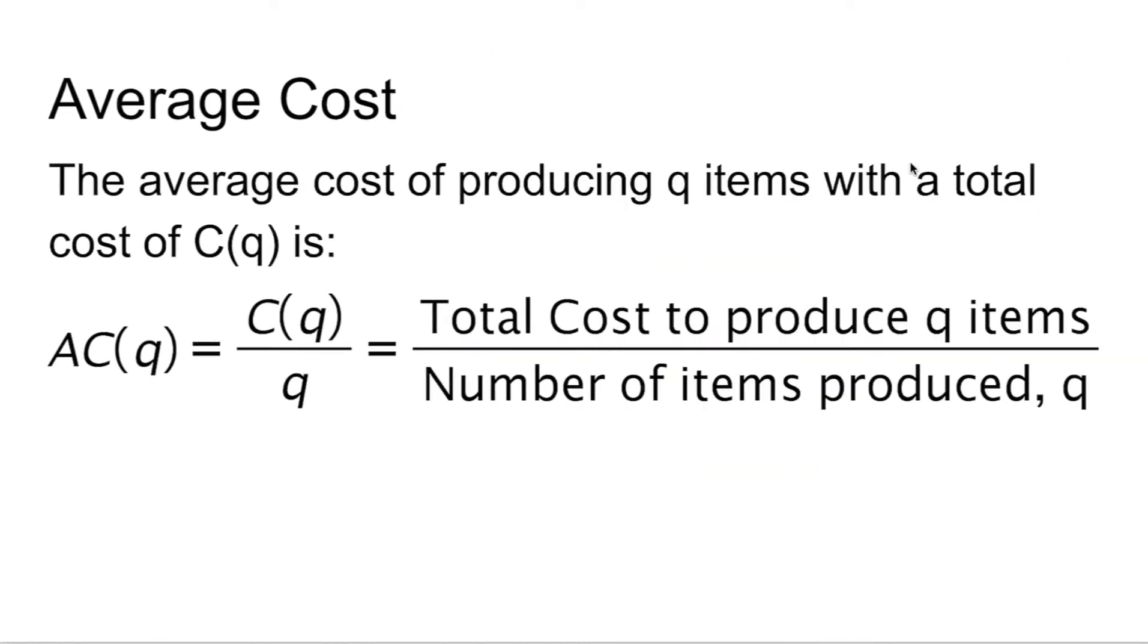Here's the definition for the average cost function. The average cost of producing Q items with a total cost of C(Q) is given by the function AC(Q) equals C(Q) divided by Q. This is where we're taking the total cost to produce Q items and we're dividing it by the number of items produced, which is Q.